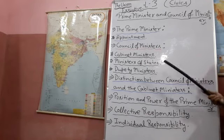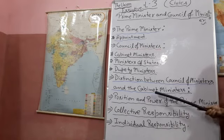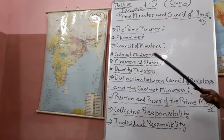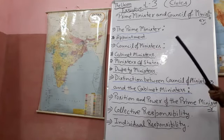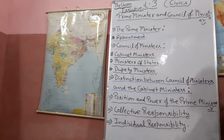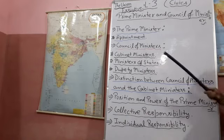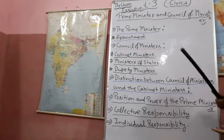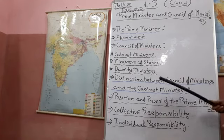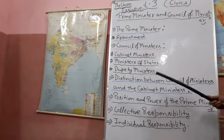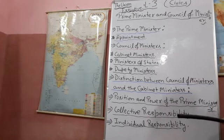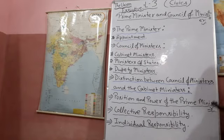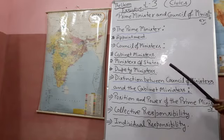How do we distinguish between the Council and the Cabinet of Ministers? First, the Council of Ministers consists of all categories of Ministers — Cabinet Ministers, Ministers of State, and Deputy Ministers. The Cabinet, on the other hand, is a small group consisting of some 25 senior Ministers, called Cabinet Ministers. All Cabinet members are Ministers, but all Ministers are not Cabinet members.